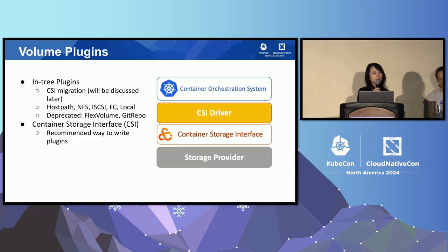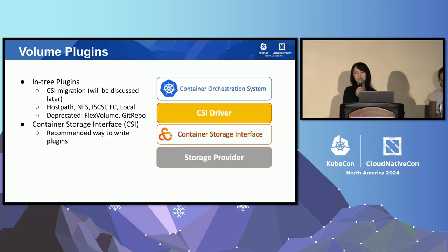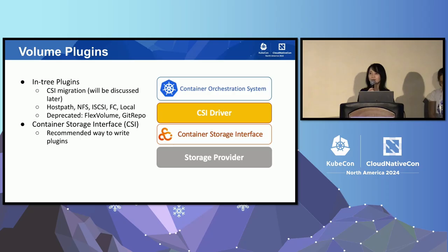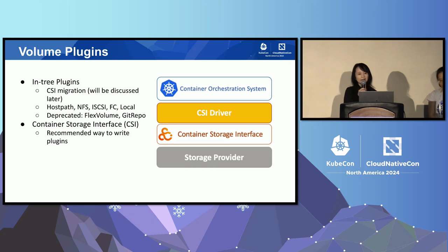Kubernetes volume plugins include in-tree plugins and out-of-tree CSI drivers. Most in-tree plugins are already deprecated or migrated to CSI drivers. We still have some in-tree drivers: NFS, iSCSI, and FC volume plugins. They can be pre-populated with data and used by the pod. We also have local volume representing a mounted local storage device. The Container Storage Interface, CSI, defines common interfaces for a solution vendor to write a driver and have its underlying storage consumed by containers running in Kubernetes. CSI is the recommended way to write plugins.